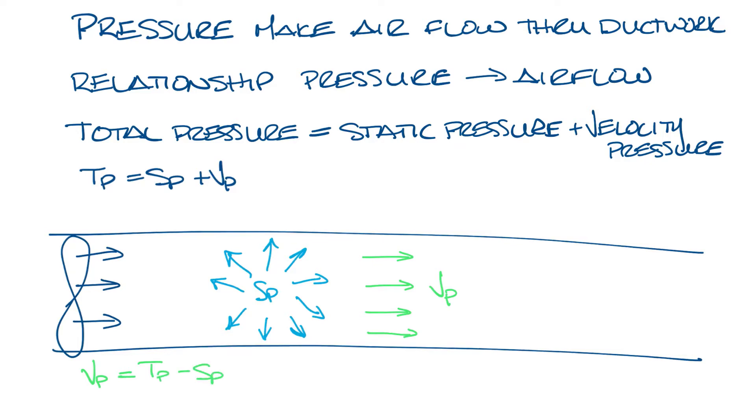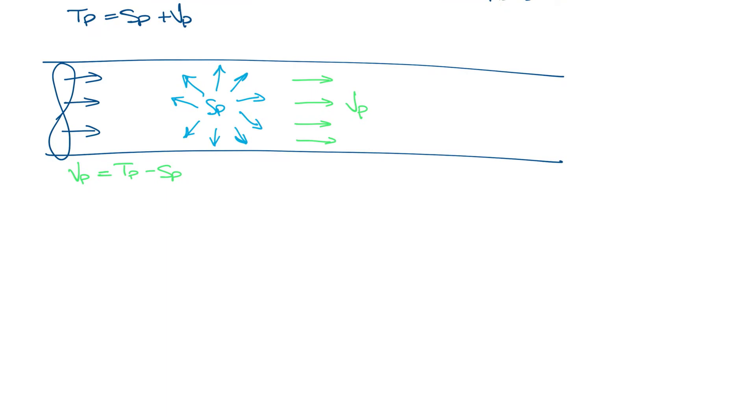So let's make some room and look at how we measure pressure in our ductwork. A pitot tube is used to measure pressure. A pitot tube is a tube with a hole pointing in the direction of air flow that measures total pressure, and a hole pointing perpendicular to air flow which measures static pressure. It's basically a tube within a tube.